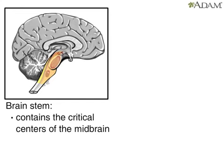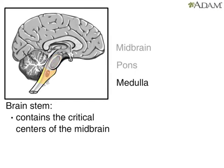The top portion of the brain stem is called the midbrain. The midbrain is a small portion of the brain stem, located at the top of the brain stem. Just below the midbrain is the pons, and below the pons is the medulla. The medulla is the part of the brain stem closest to the spinal cord.